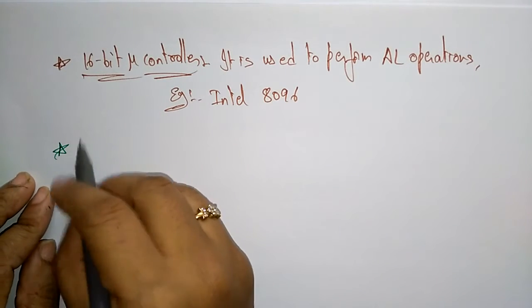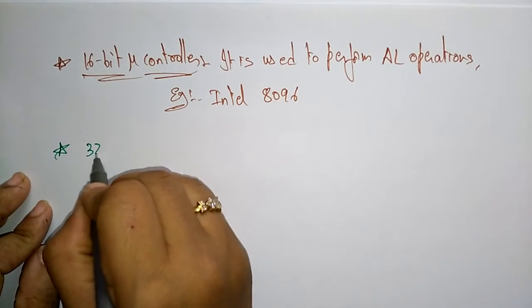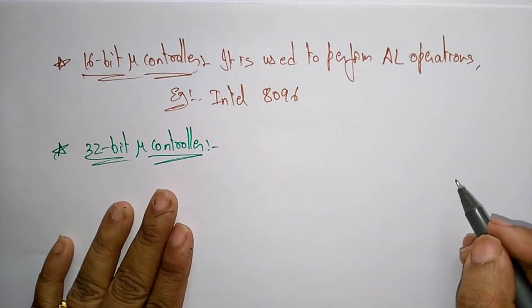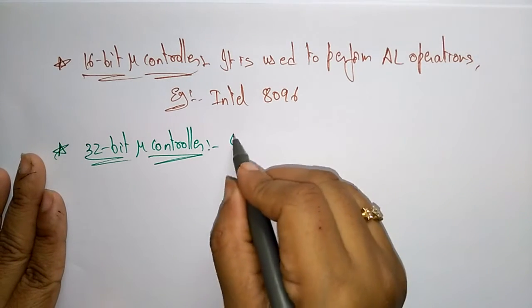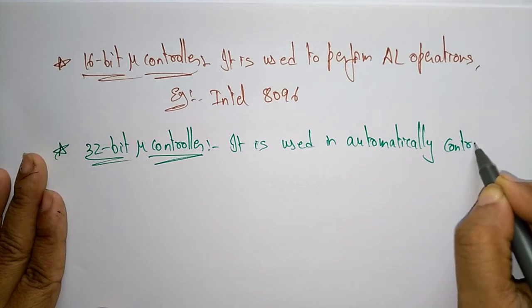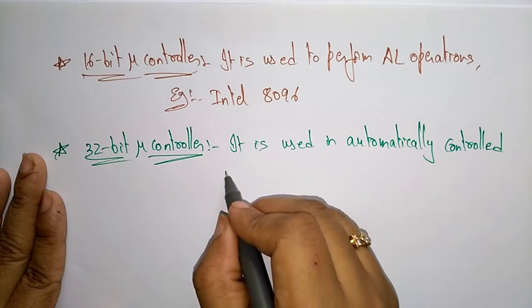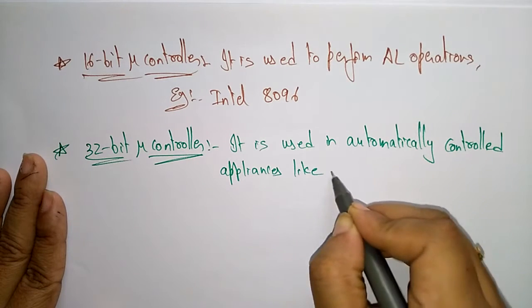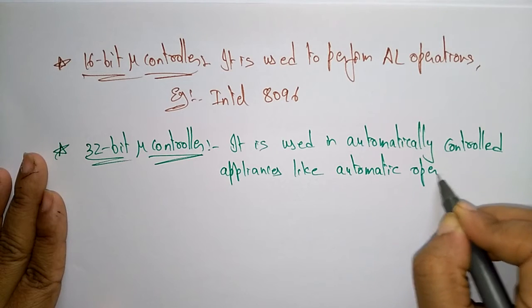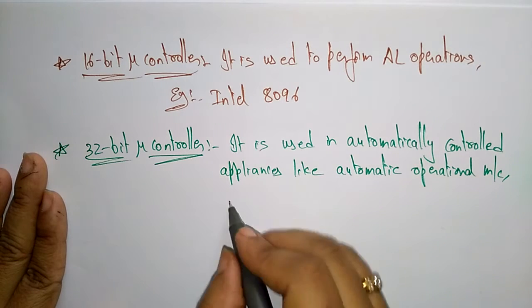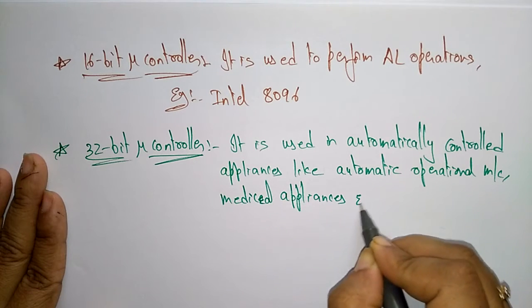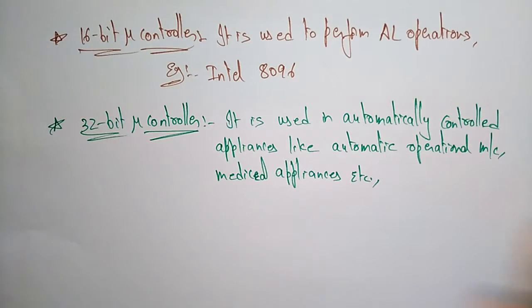The 32-bit microcontroller is used in automatically controlled appliances such as automatic operational machines and medical appliances.